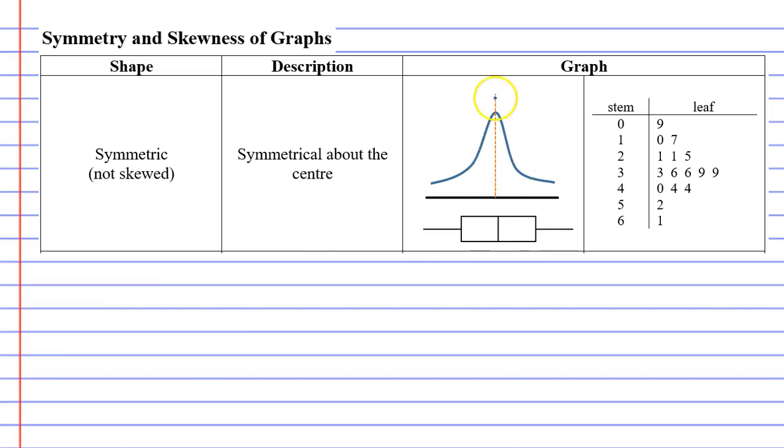In case you've forgotten, symmetric just means if you put a dotted line, it'll look the same on both sides. We have some other graphs that are symmetric, our box and whisker plot. If we look at our stem and leaf plot, you can see it's got a kind of curvature to it, which is symmetric.